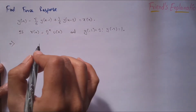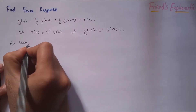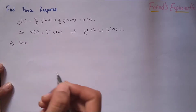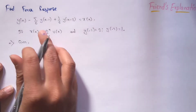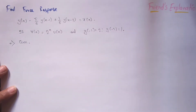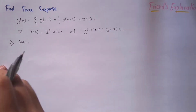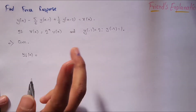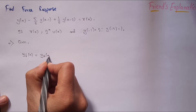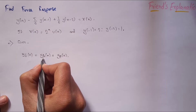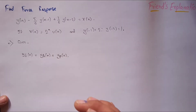When writing the answer, we note what is given in the question. To find the forced response, the initial conditions are kept as zero and the input is considered. We know that the forced response y of n consists of two parts: the homogeneous equation and the particular equation.